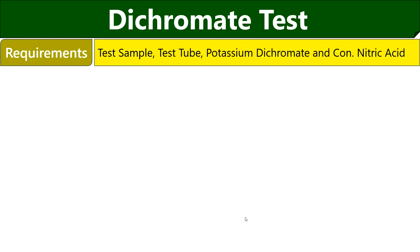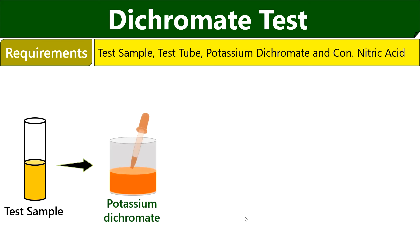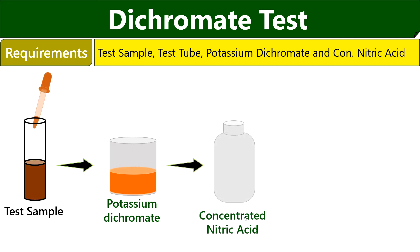To perform the dichromate test, we need test sample, test tube, potassium dichromate solution, and concentrated nitric acid. First take 2 ml of test solution into the test tube, then add a few drops of 5% potassium dichromate solution. The solution turns brown in color. After that, add a few drops of concentrated nitric acid into the solution.